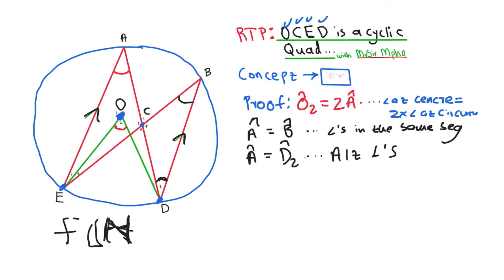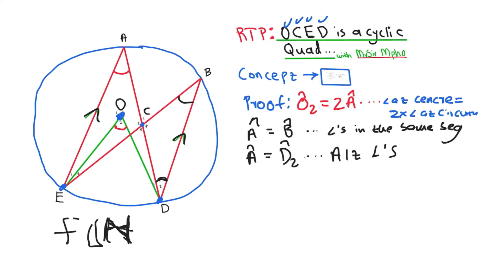Now I look at triangle CBD. CB is extended, which means C3 is an exterior angle of that triangle. Therefore, by the exterior angle of a triangle, angle C3 equals angle B plus angle D2.